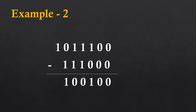Now moving to another example, which will further clarify binary subtraction. The first column is zero minus zero, result is zero. Second column is zero minus zero, result is zero. Then one minus zero, result is one. The second column: zero minus one is not directly possible, so we perform borrow operation. Then one minus one is zero, and again one minus one is zero. We can't subtract one from zero in the next column, so we borrow: this one becomes zero and we borrow the base two, represented as one zero. Subtracting one from two gives result one.